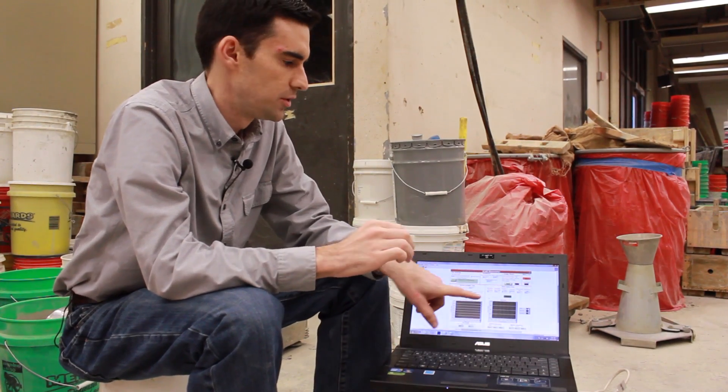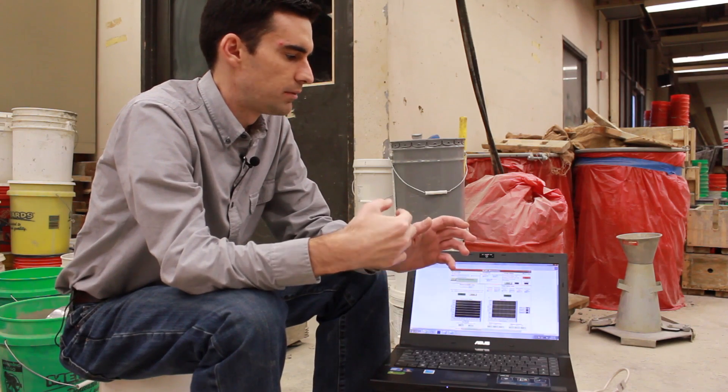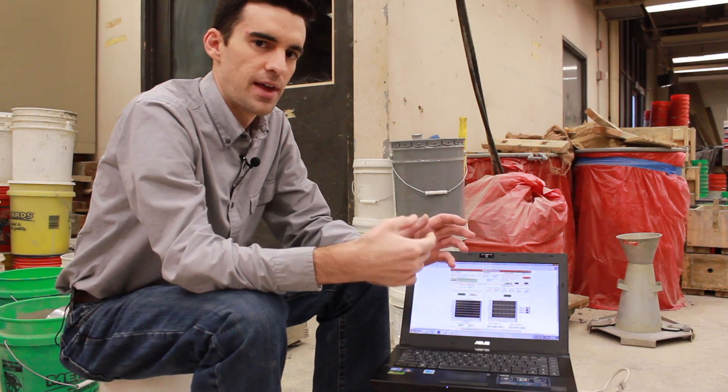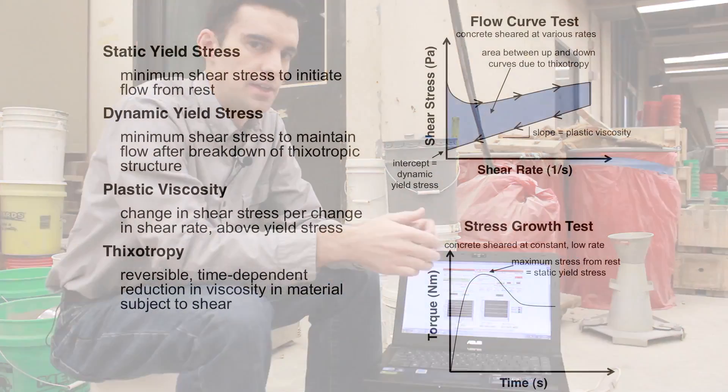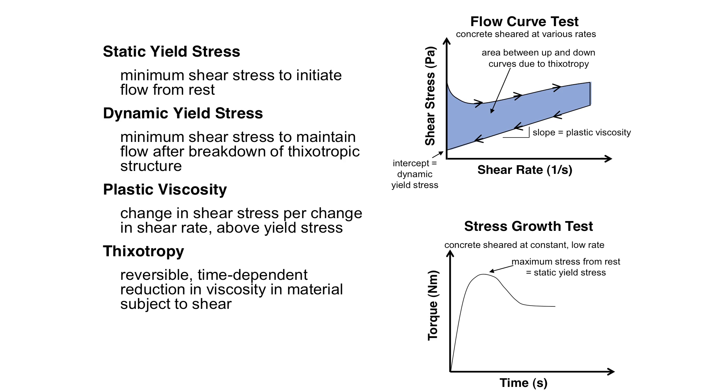The second way is using just the flow curve test, and this is sometimes called a hysteresis curve. We measure an initial flow curve when the concrete has been at rest, and we have the effects of the thixotropy affecting the flow curve. We then run a second flow curve right after that, after we've broken down the effects of the thixotropy. The difference between those curves, the area between those curves, or the hysteresis, is an indication of the thixotropy.